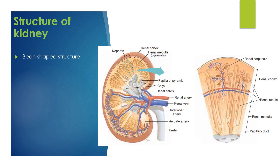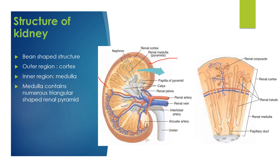Now let's see the structure of the kidney. The kidney has a bean-shaped structure. And if we cross-section the kidney, we can find that there are two regions — the outer one is the cortex, and the inner one is the medulla. In the medulla there are numerous pyramid-shaped structures, and these are the renal pyramids. Inside these renal pyramids there are numerous nephrons, which are the structural and functional units of the kidney.